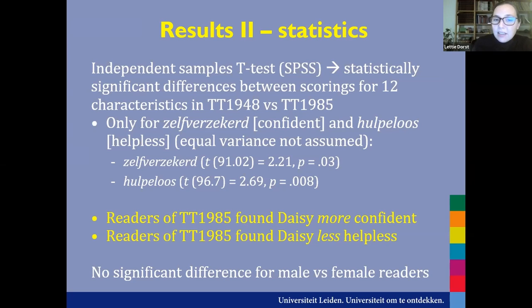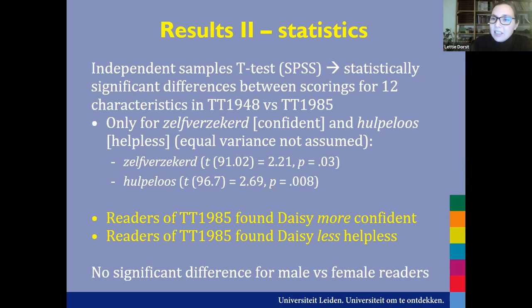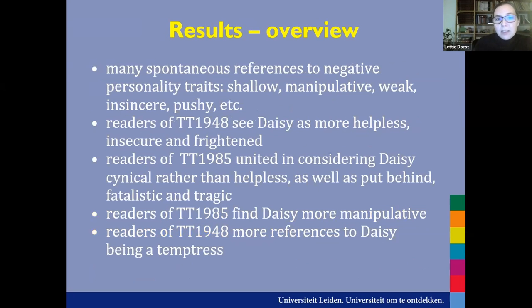Only for 'confident' and for 'helpless' did we find a significant difference. Namely, readers of the newer 1985 retranslation found Daisy more confident — a more positive interpretation — and they found her less helpless. This confirmed our idea that the 1985 retranslation was more positive in its presentation of Daisy, and indeed readers had a more positive view of her in terms of confidence and helplessness.